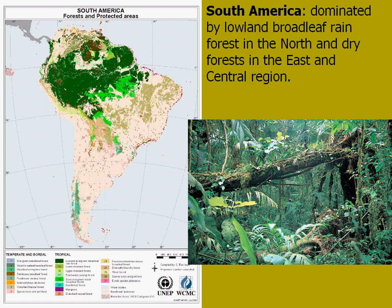In South America, you see a lot of lowland broadleaf rainforests or tropical forests in the northern part. But as you move farther south, you end up with more dry forests or what might be considered temperate forests in the east and central region. As you can see from the map on the left, the Amazon rainforest highlighted in dark green shows extensive lowland broadleaf rainforest areas.